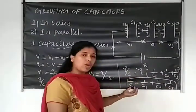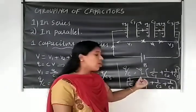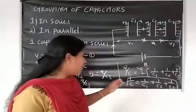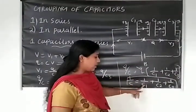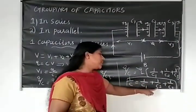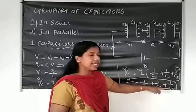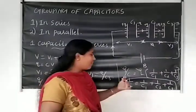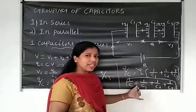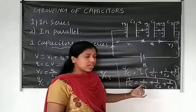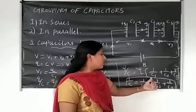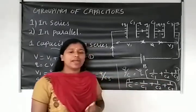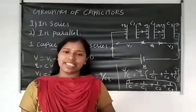That means the reciprocal of capacitance of the combination equals the sum of reciprocals of each individual capacitance. For N capacitors connected in series: 1 by C is equal to 1 by C1 plus 1 by C2 plus 1 by C3, and so on up to 1 by CN.